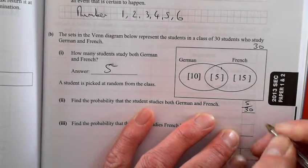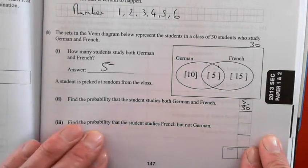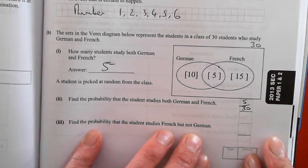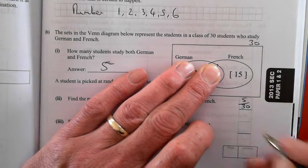You could do a decimal as well if you can. Find the probability the student studies French but not German. French but not German: 15 over the total.